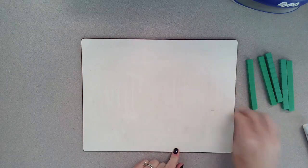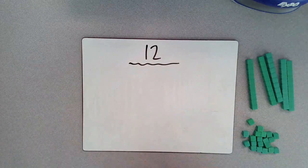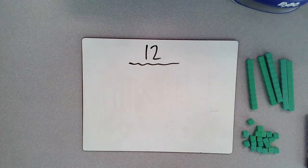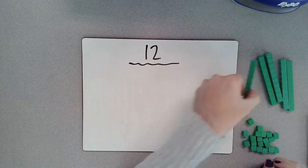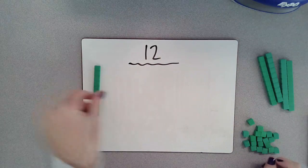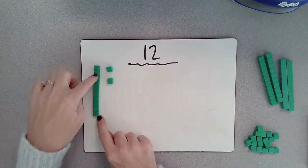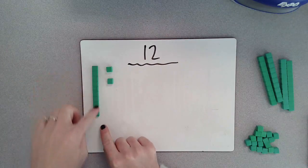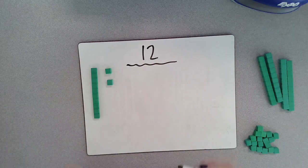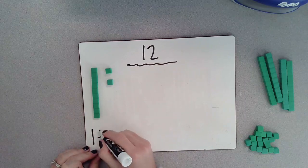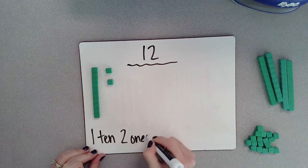Our first number that we're going to be taking a close look at is the number 12. One way to create the number 12 using our place value blocks is using a 10 and then two ones, because I know that this is worth 10. Think about it as a full 10 frame. So 10, 11, 12. So we can create the number 12 by using one 10 and two ones.